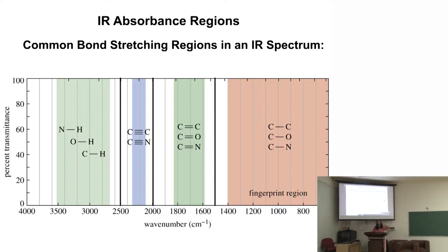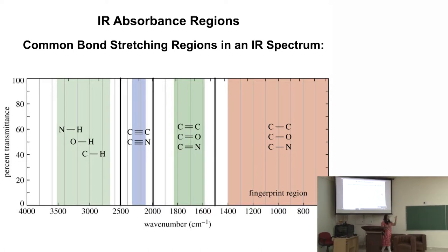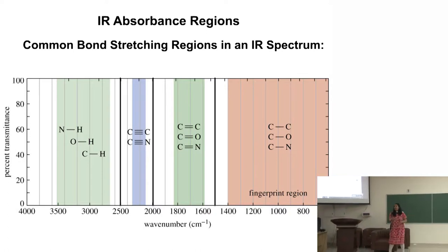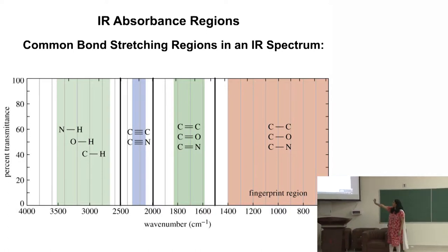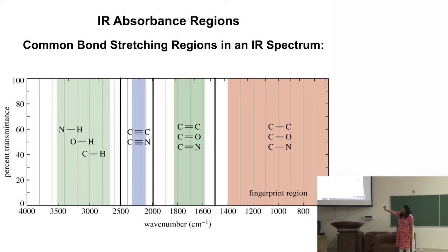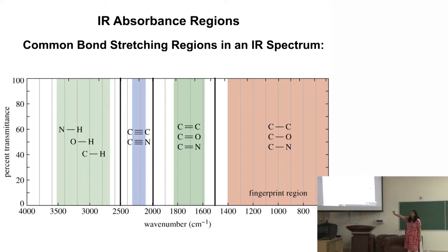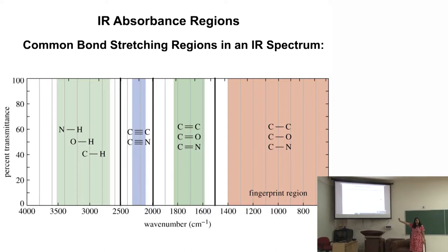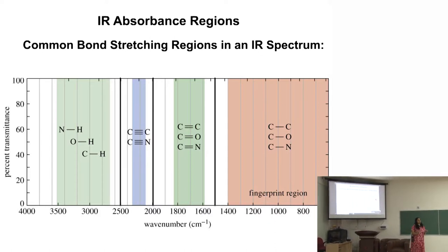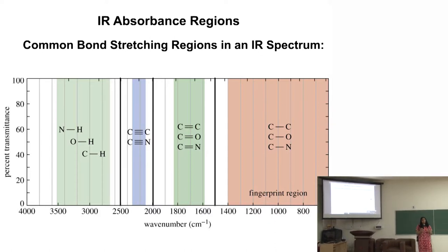This is why the 2500 to 4000 cm⁻¹ region contains those light-atom bonds. Depending on the compound we are making, we should be able to see peaks in that region.